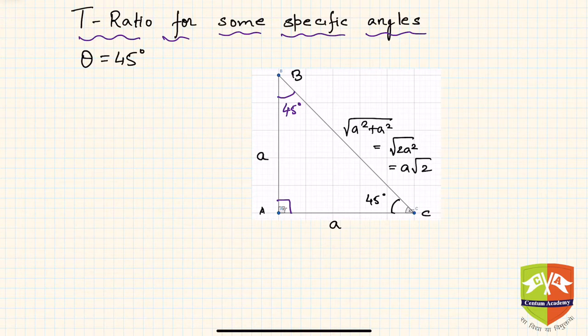Now let us say in triangle ABC, side AC equals AB equals a. Both sides are equal. Why? Because since the two angles are equal to 45 degrees, triangle ABC is an isosceles triangle.